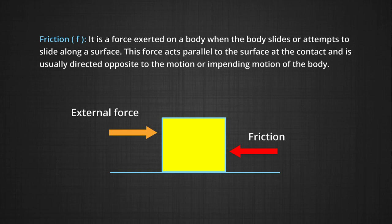What is friction? It is force exerted on a body when the body slides or attempts to slide along a surface. This force acts parallel to the surface at the contact and is usually directed opposite to the motion or impending motion of the body. We will discuss friction in the next session.